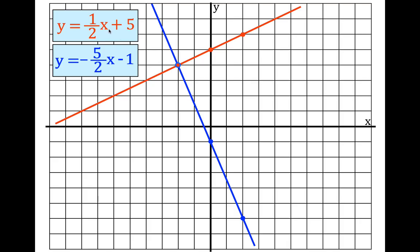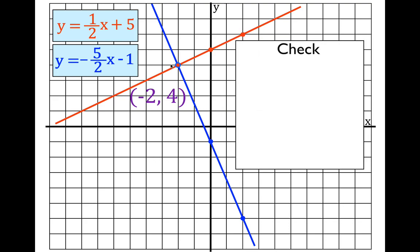Now I'm going to check to make sure I did this correctly — that the lines are graphed properly and that this point, which has the coordinates x equals minus two, y equals four, is the solution for both of those lines. I'm going to mach eine Probe. For the first check, I have y and x, and I'm going to substitute my y and x values in.